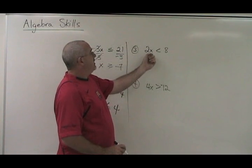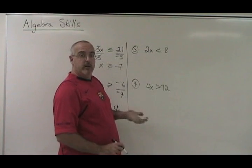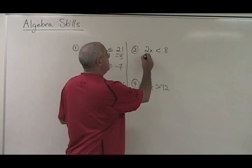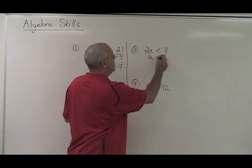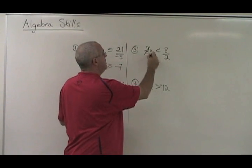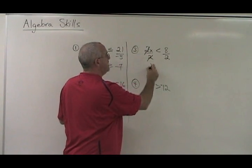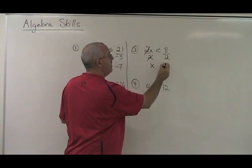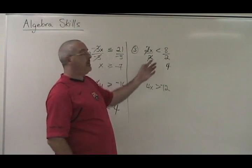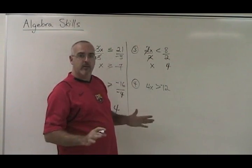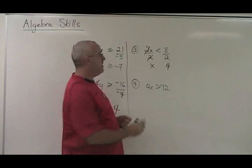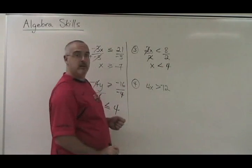Here, my x is being multiplied by a 2. I have to divide both sides of the equation by 2. The 2's cancel. My x is isolated. 8 divided by 2 is 4. But because 2 is not a negative number, I do not turn the sign backwards. I keep it the way it is.